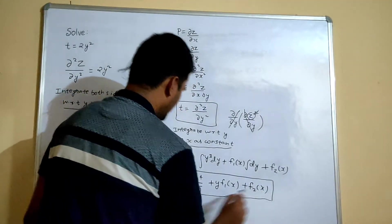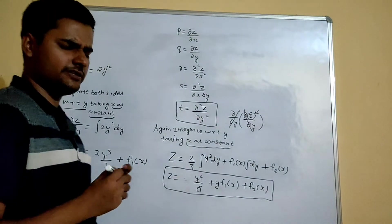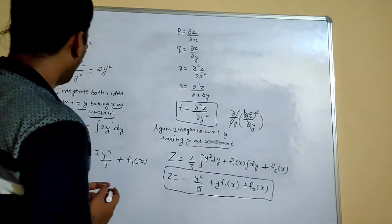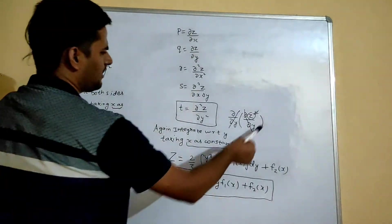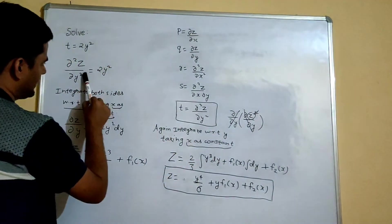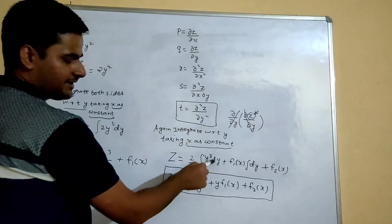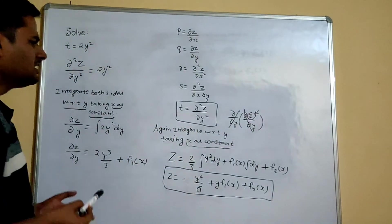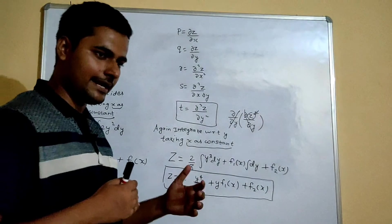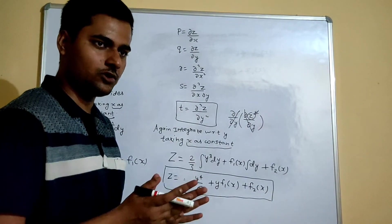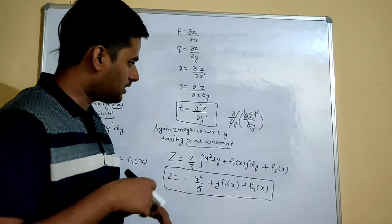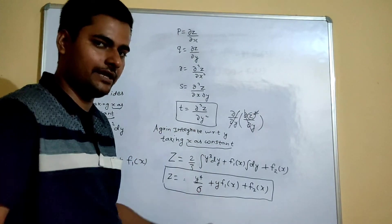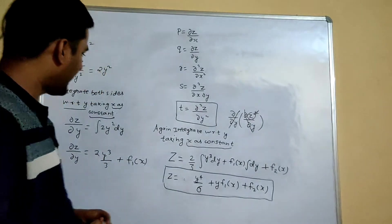So I hope you understood this question. There was no problem in solving this. As I told you, this T value you plugged in. Now you got this. So one by one we removed. So first we remove del by del y, then this del by del y. So in order to remove one del by del y, you have to integrate with respect to y once.